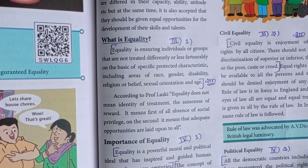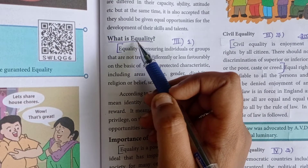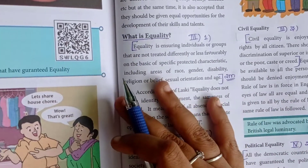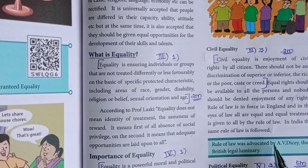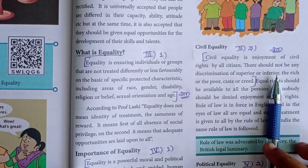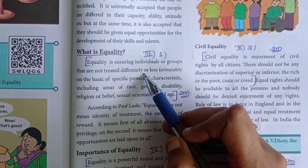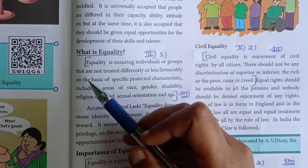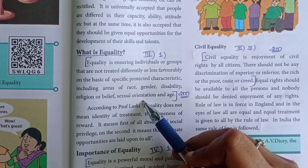Next, what is equality? Equality is ensuring individuals or groups that are not treated differently or less favorably on the basis of specific protected characteristics, including areas of race, gender, disability, religion or belief, sexual orientation, and age.